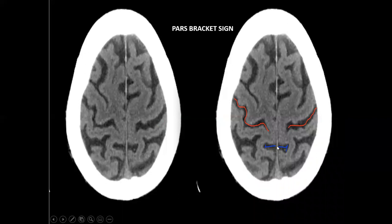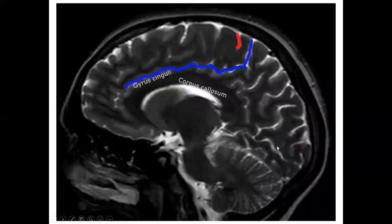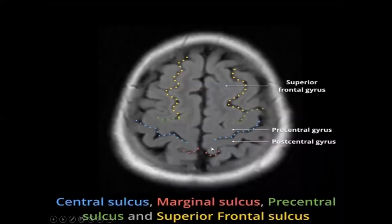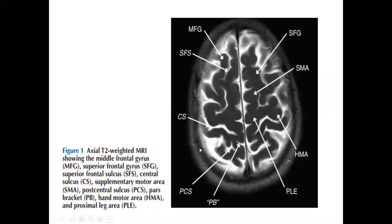The pars bracket sign — or marginal sulcus — shows the cingulate sulcus continuing toward the margin of the brain. Sometimes the marginal sulcus looks like a mustache sign. You can differentiate the pars bracket or marginal sulcus from the omega sign of the central sulcus.